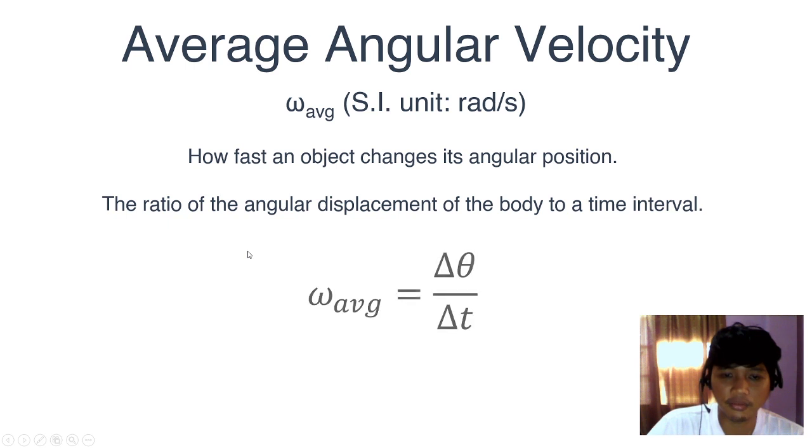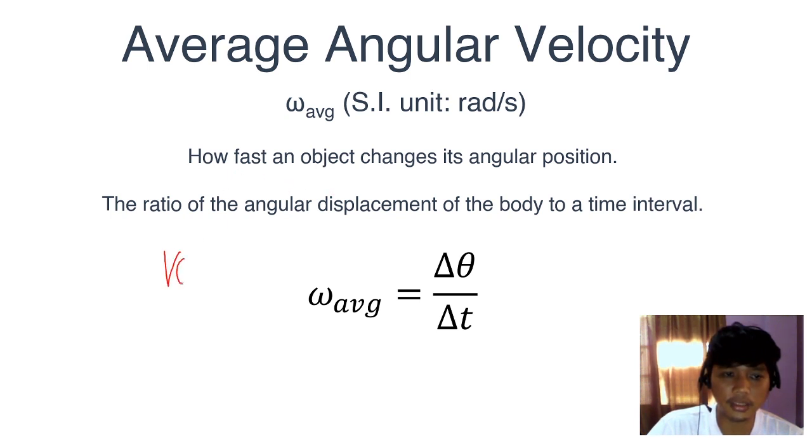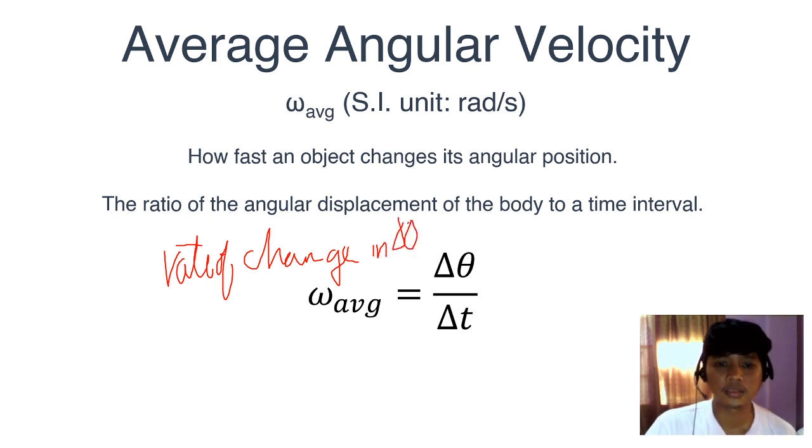Our formula is delta theta over delta time. Allow me to discuss a little bit more about this formula. When it comes to average angular velocity, we're talking about rate of change in angular position with respect to time. When I ask for the average angular velocity, I'm interested in knowing how fast that object changed position. Since it's a rate of change, there has to be some change involved.